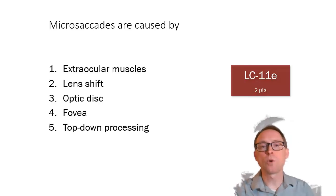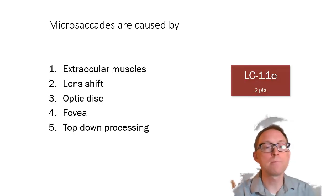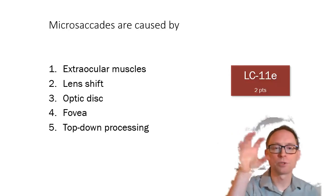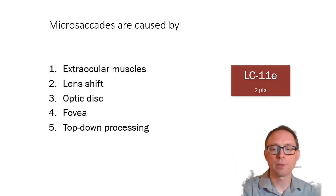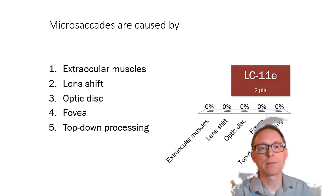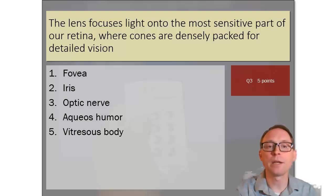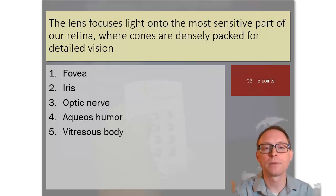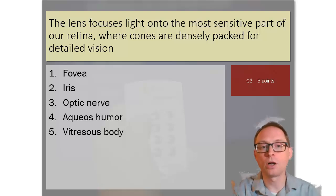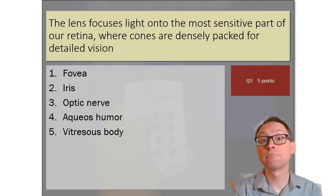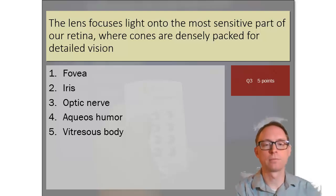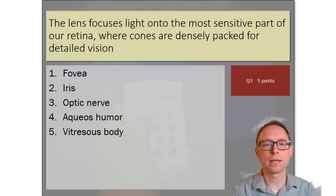Review question: microsaccades are caused by extra-ocular muscles — those are the muscles outside the eyeball. The lens focuses light on the most sensitive part of our retina, where cones are densely packed. That part of the retina is called the fovea.